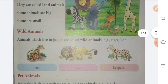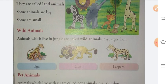Next is wild animals. Animals which live in the jungle are called wild animals. For example, tiger and lion — these are wild animals.